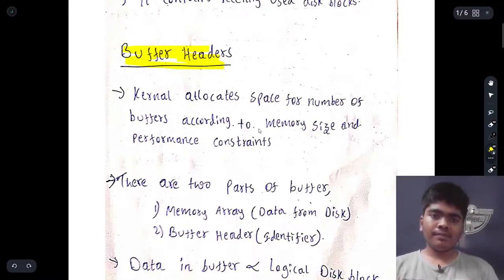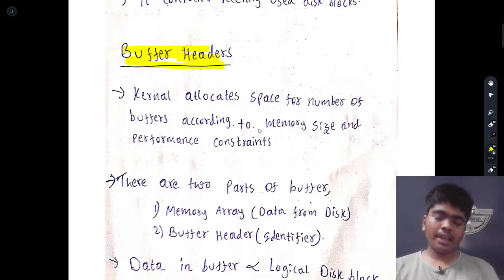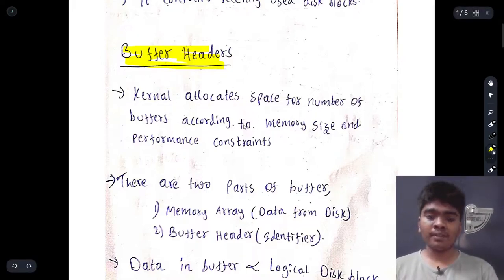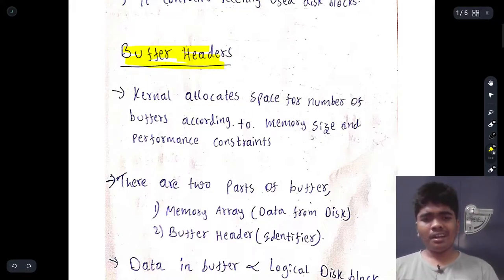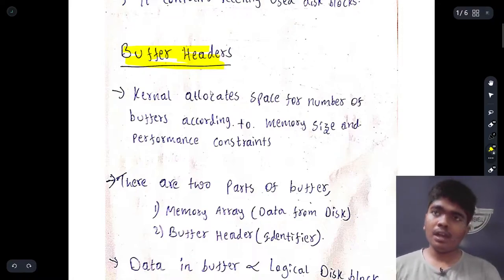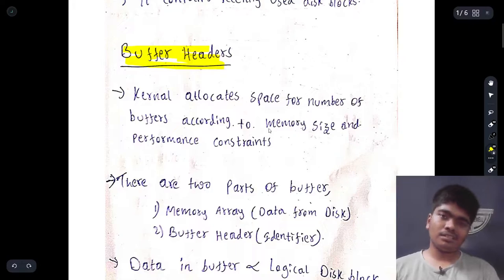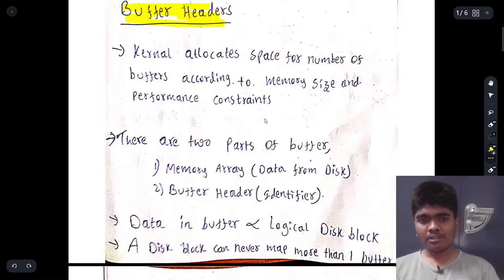For example, consider an Xbox. If you are playing a game and a power cut happens, when you turn the Xbox back on and return to that game, you can resume from where the power cut occurred. This is because the buffer cache is saved periodically. Similarly, if you forget to save a Word file, the kernel has allocated buffer space and will prompt you to restore the unsaved data on next open.